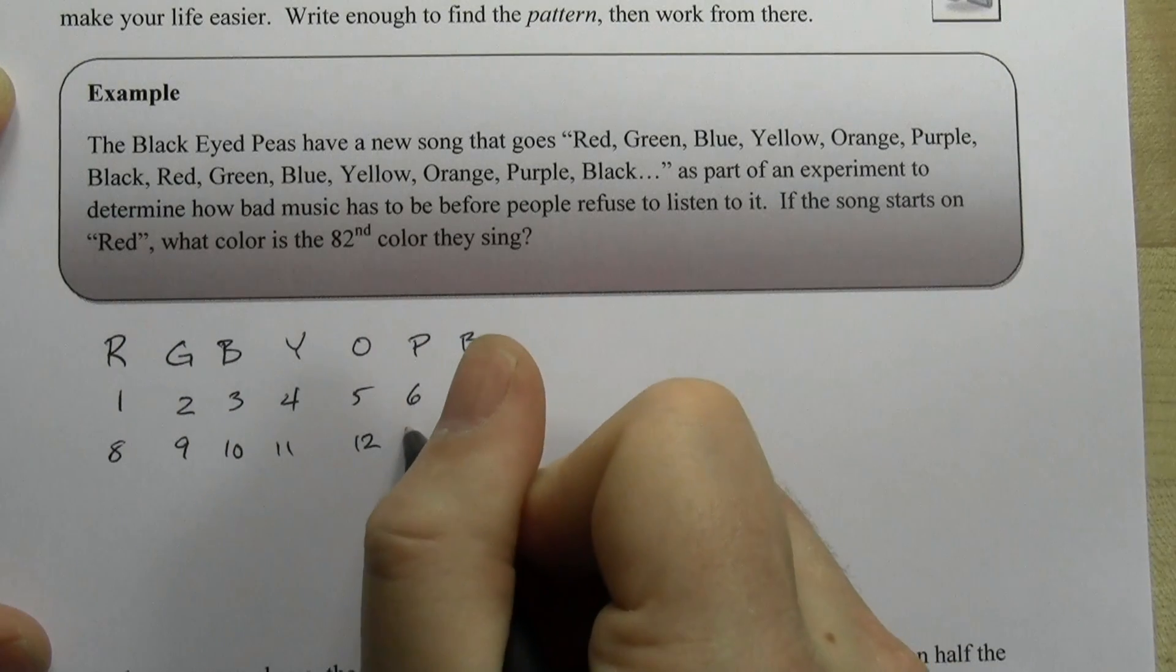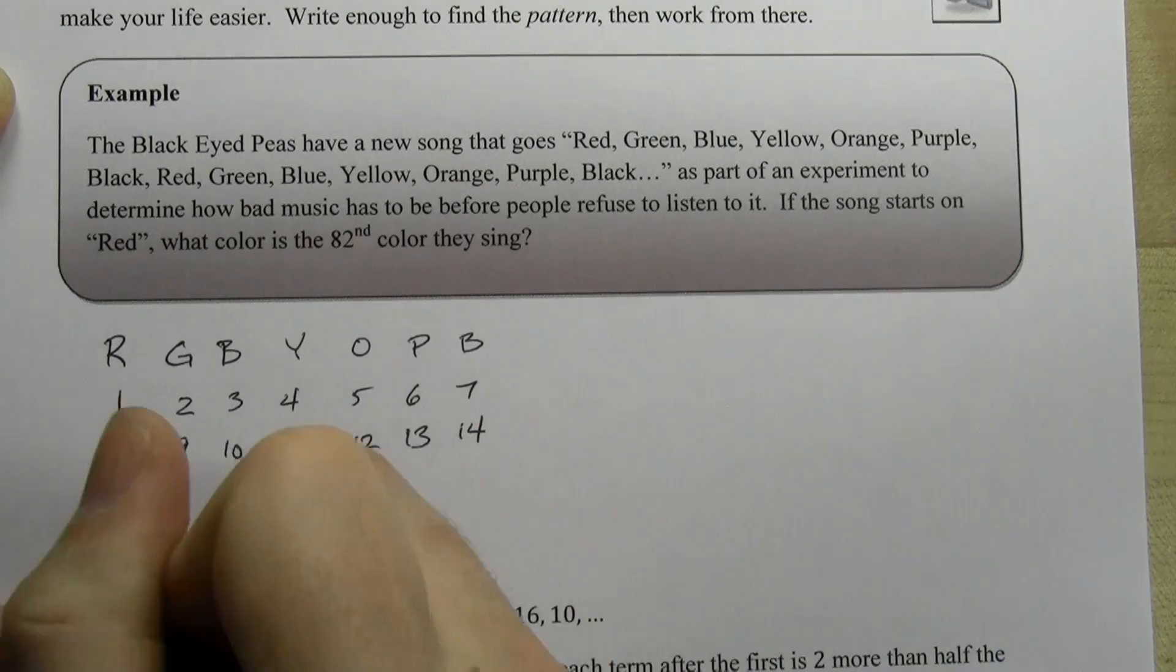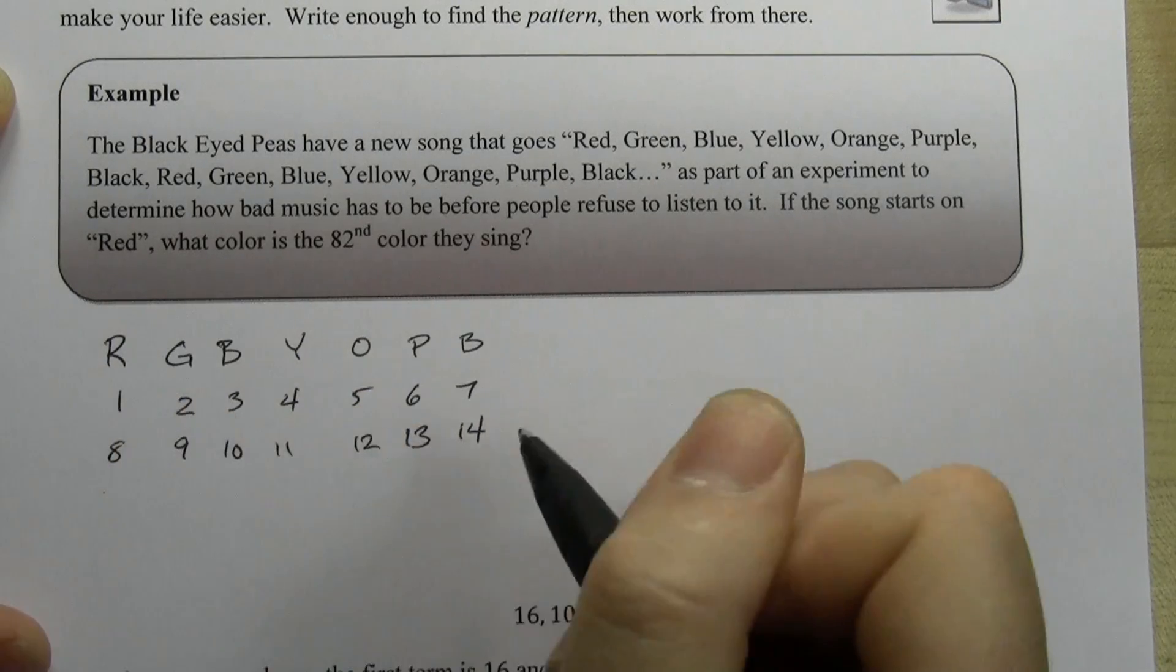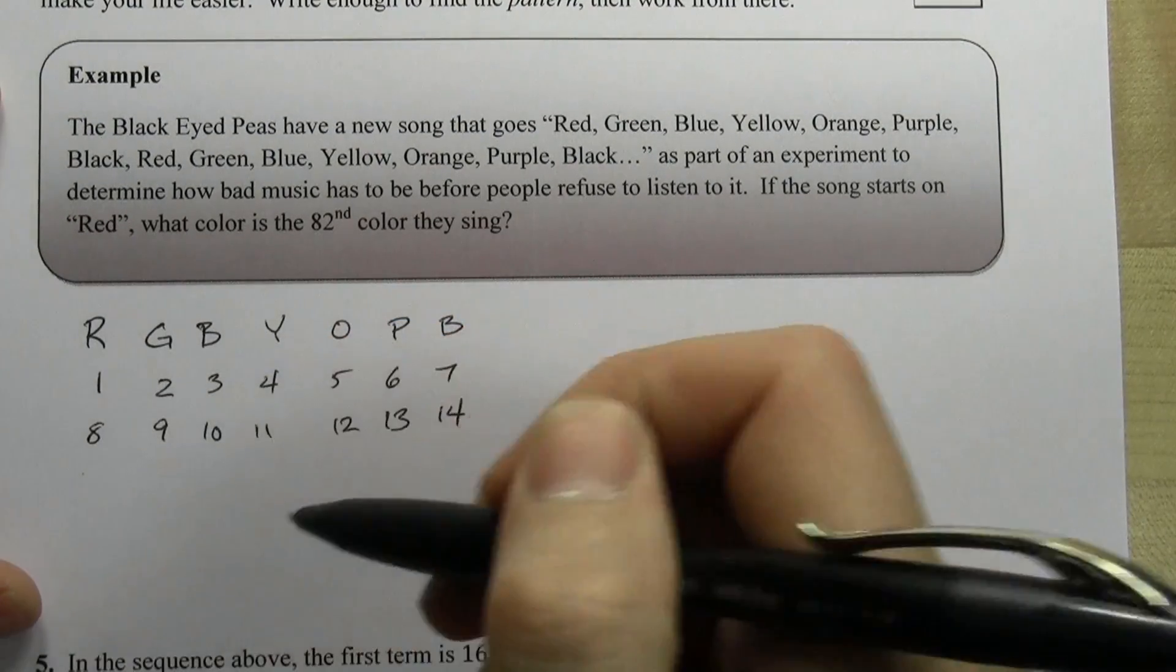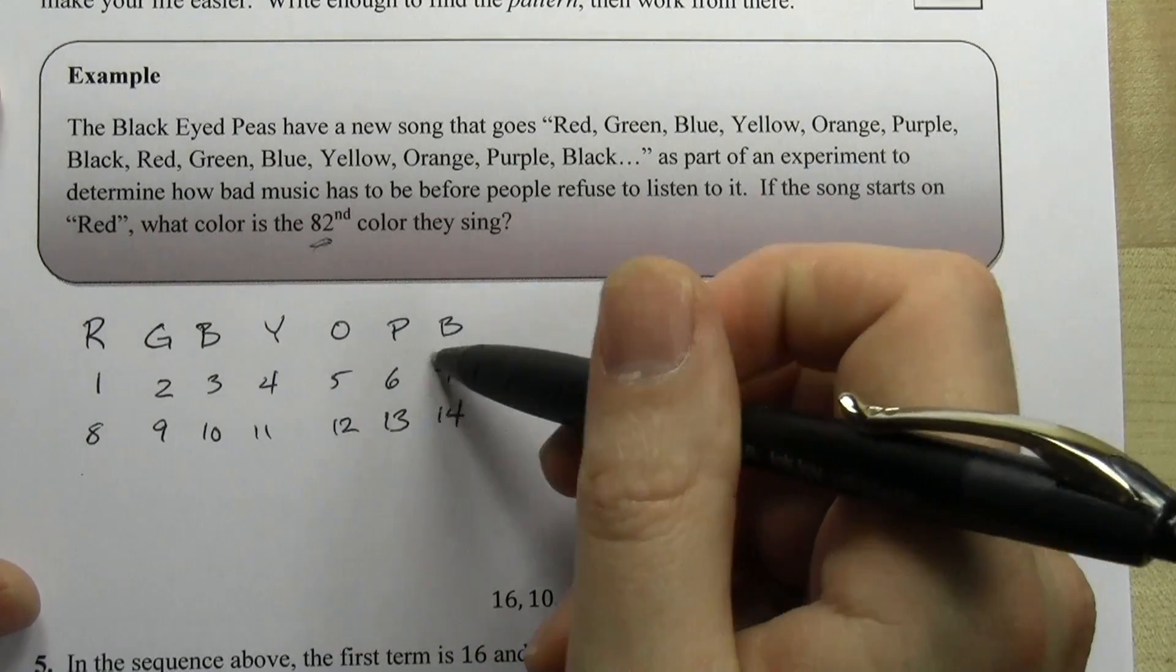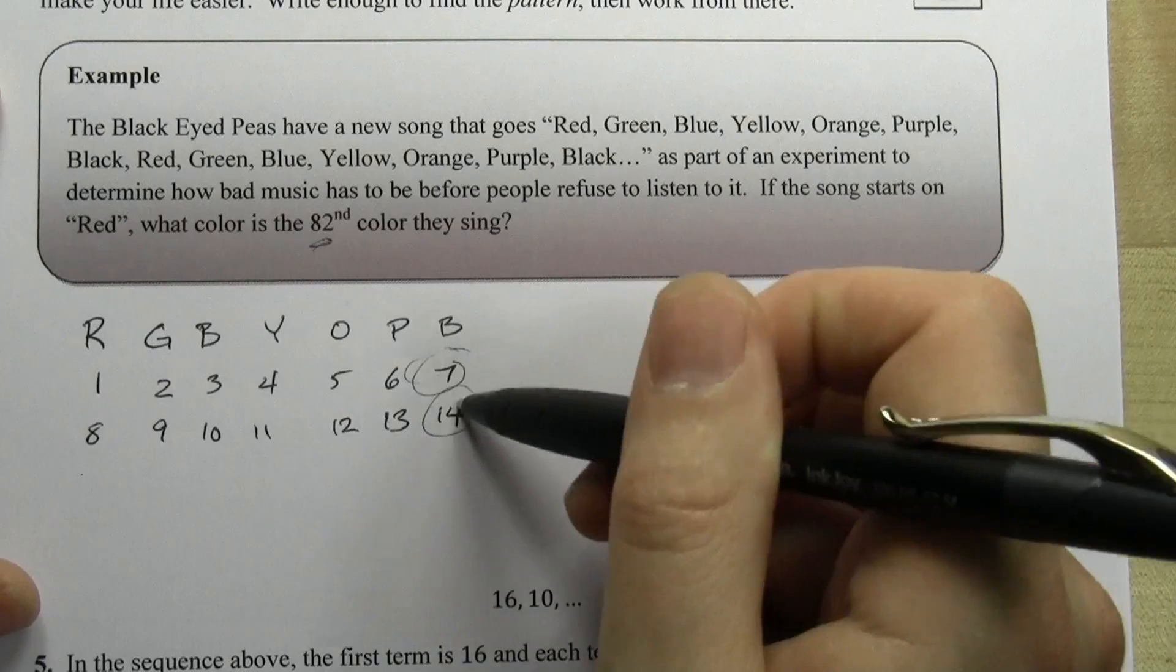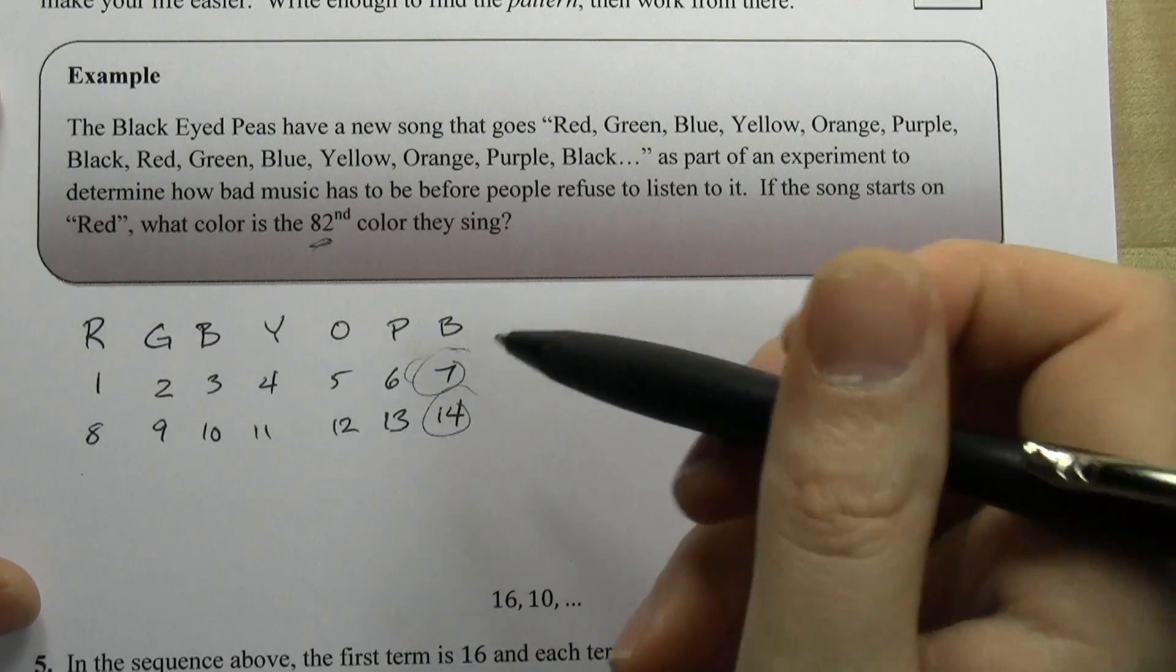Now if you look at this you'd say okay, well this goes up by 7 every single time, so that's cool. 82 is not divisible by 7, so that's not cool. But I can see that this final column, this black column, is multiples of 7.